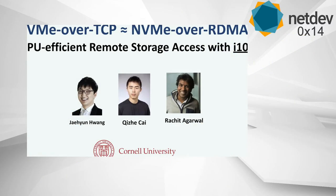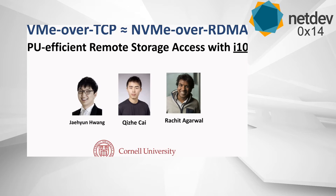Thank you everybody for coming. I'm going to present this talk on work we started around two years ago, published at NSDI this year. Our system is called i10. The core goal is to meet the throughput per core of NVMe or RDMA using in-kernel techniques, without changing any applications or hardware infrastructure. Most of the work was done by my postdoc Shai Wang and Zhijie Kai, a PhD student here at Cornell University.